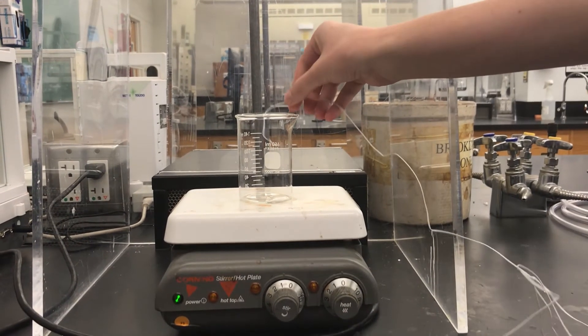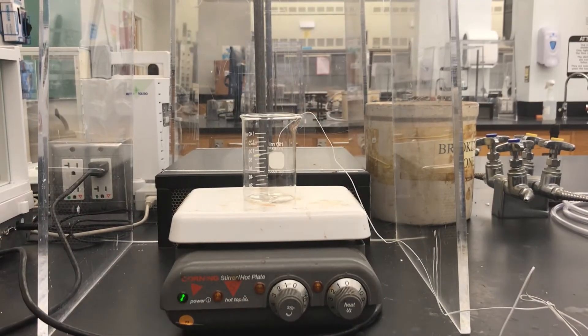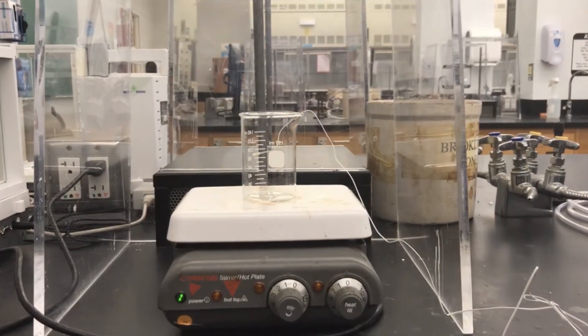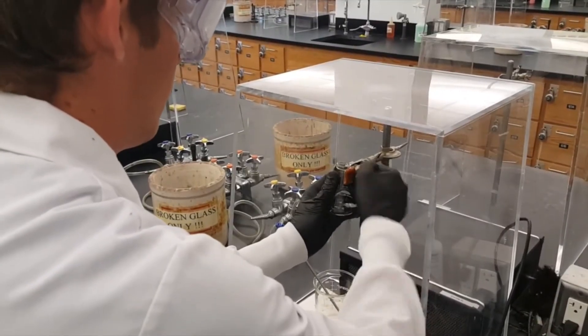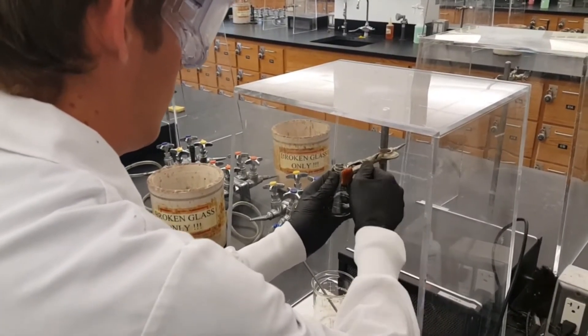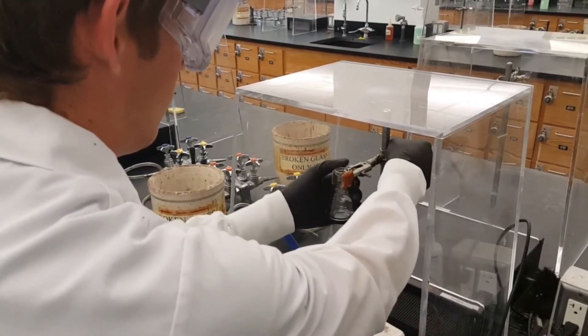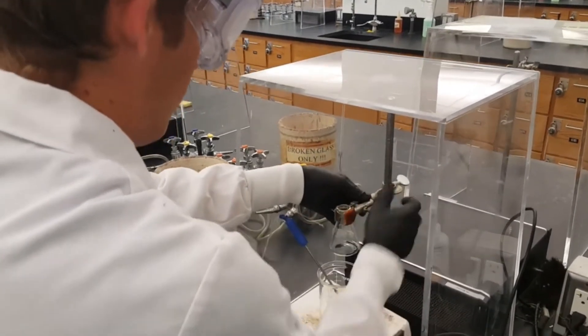Now place the thermometer in the beaker then get your 50 milliliter Erlenmeyer flask. You're going to clamp this onto the ringstand using a utility clamp and then you're going to lower it so that it's suspended in this beaker.